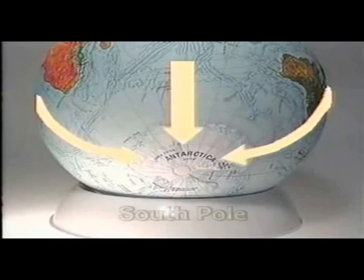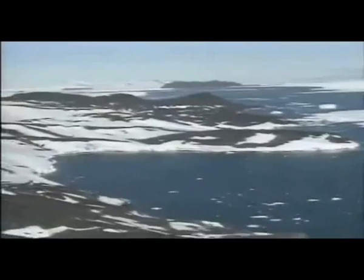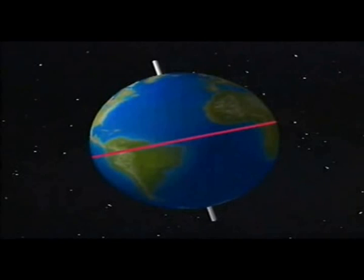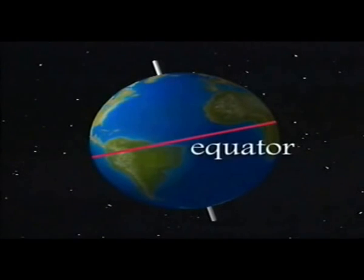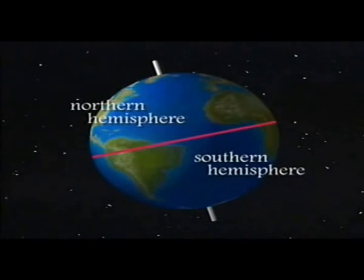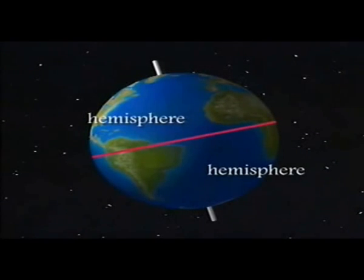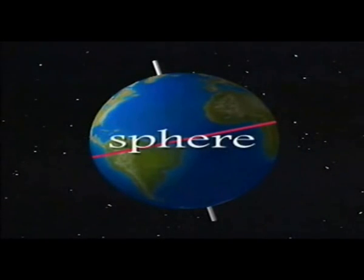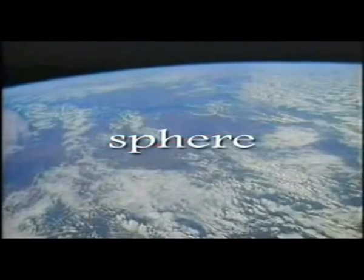At the opposite end of the globe is the South Pole — the southernmost place on the earth. Halfway in between the two poles is an imaginary line that goes all the way around the earth. This line is called the equator. It divides the earth into two halves: the Northern Hemisphere and the Southern Hemisphere. The word hemisphere means half a sphere — a sphere being a round object like a ball, or in this case, the earth.